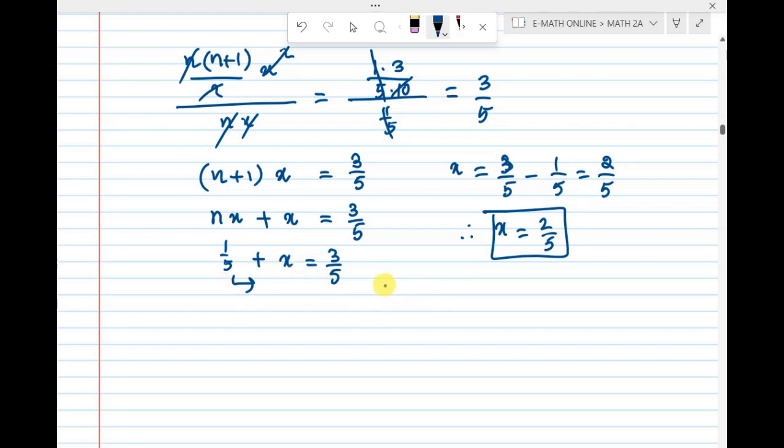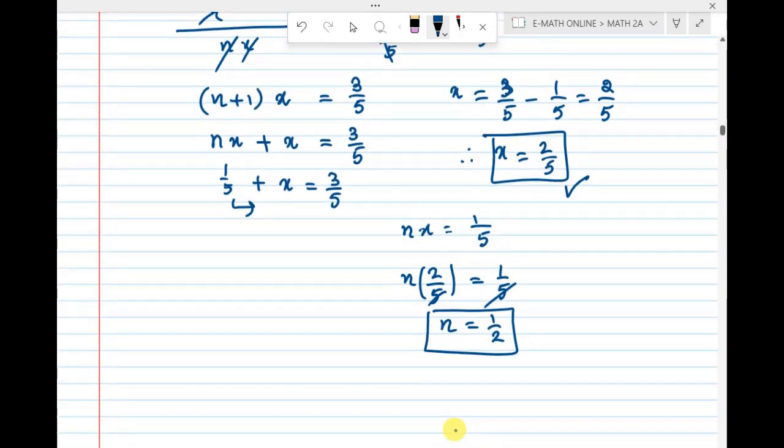This value n into x is 2 by 5. So nx equal to 1 by 5. That means n into 2 by 5 equal to 1 by 5. 5 cancel. Therefore, n equal to 1 by 2.